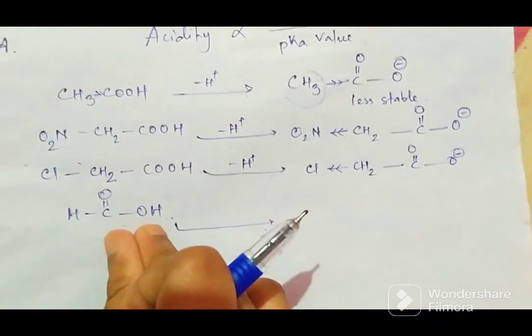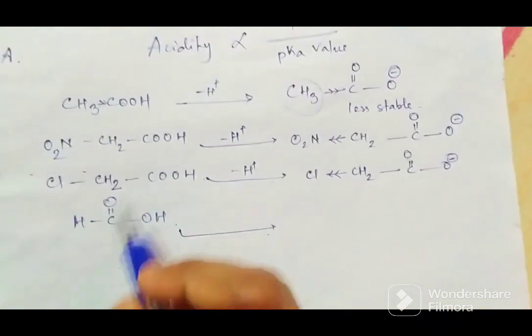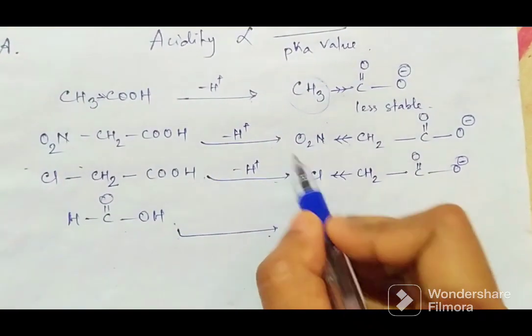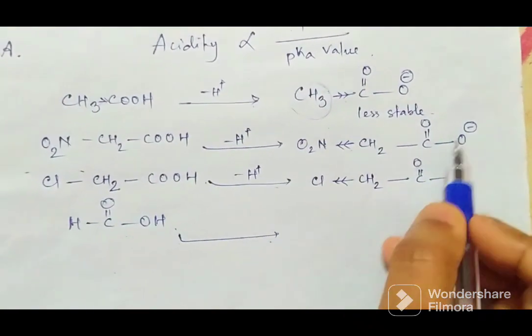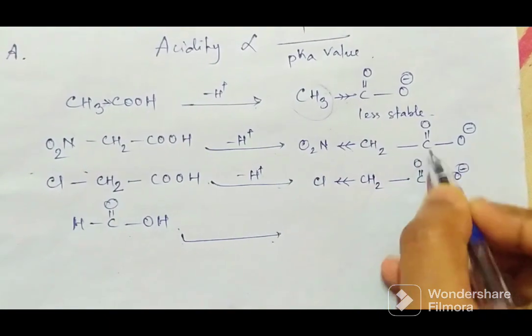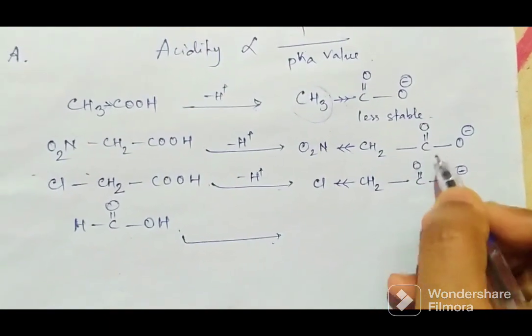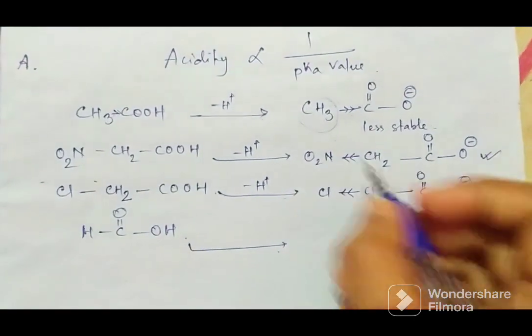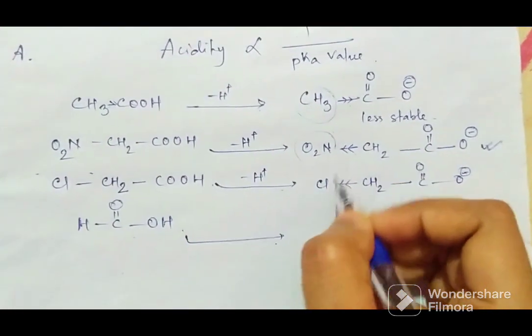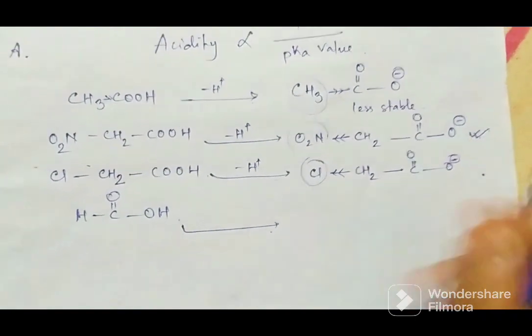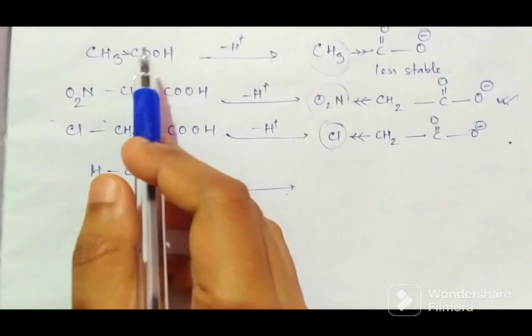So these two are more acidic. Now in these two compounds, this one, because NO2 has more electron withdrawing power than chlorine, so this is more acidic than this. So in these four compounds, nitroacetic acid will be more acidic.